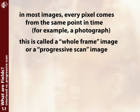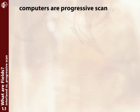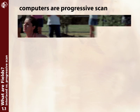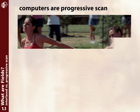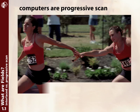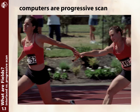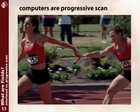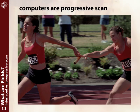Progressive scan refers to the way that, say, a computer screen is drawn. It starts at the very top, draws a line, draws the next line down, the next line down, and progresses until it reaches the bottom. It goes back to the top and draws the next image.